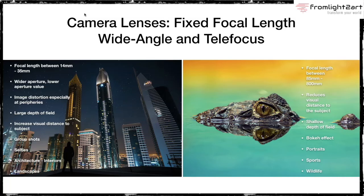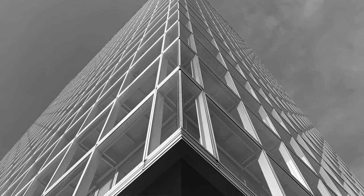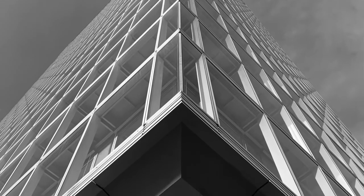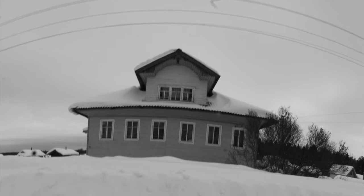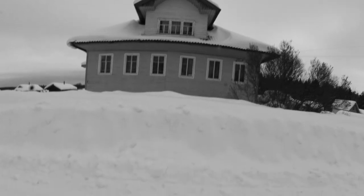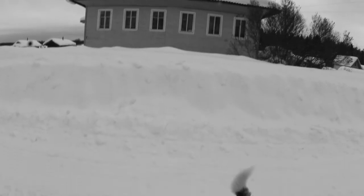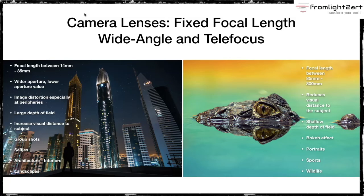Wide-angle lenses are also good for architecture — you're able to get a wide angle of view. However, you do have distortion, and there are special lenses for architecture that correct that distortion. And in general they're good for landscapes, because you're capturing a wider area.